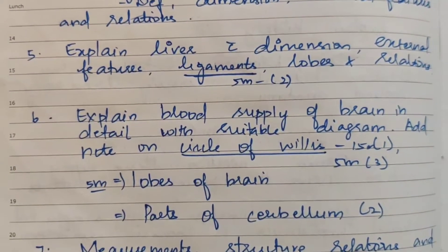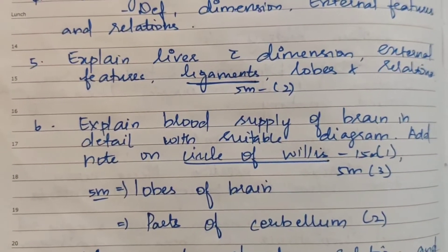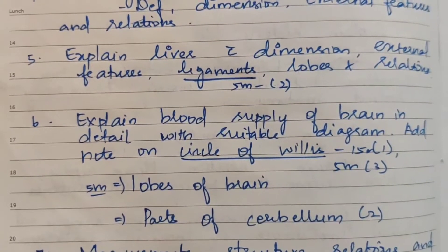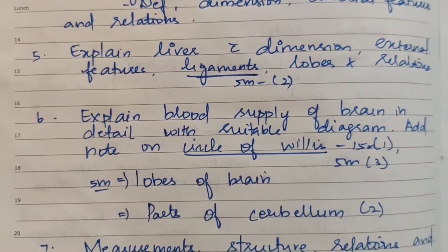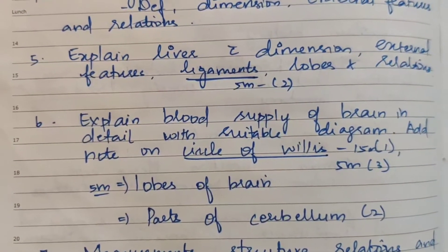The 5th topic is the liver: explain with dimension, external features, ligaments, lobes, and relations for 5 marks. Ligaments of the liver are also a key subtopic.